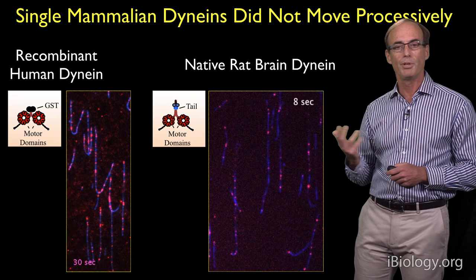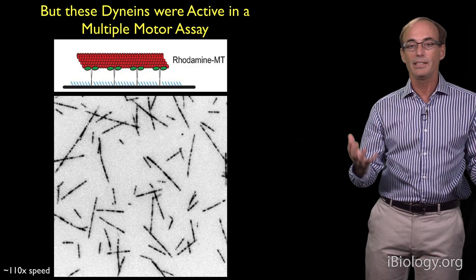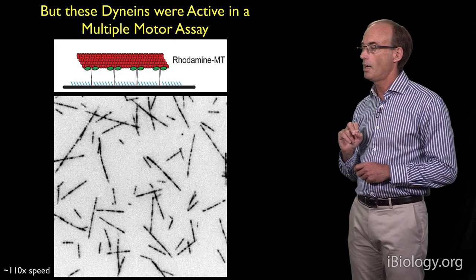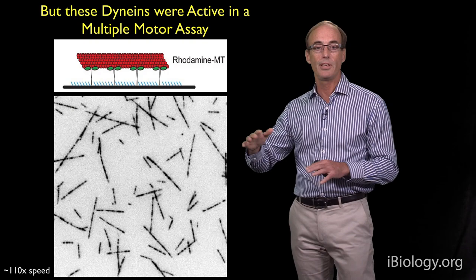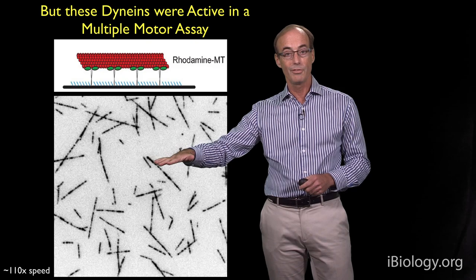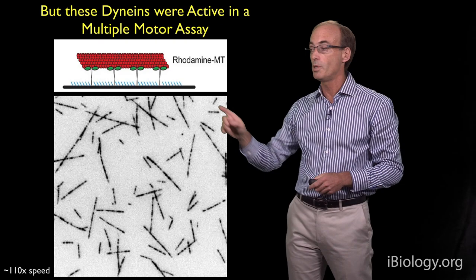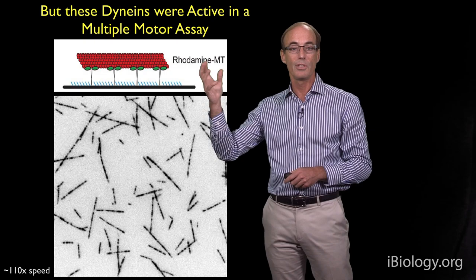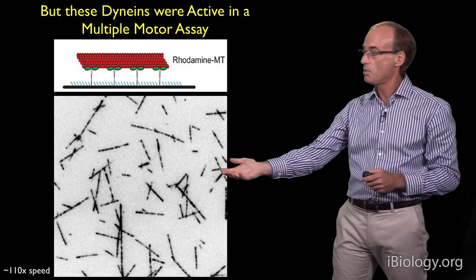However, these dyneins weren't completely inactive, because we then tested them in another kind of motility assay and saw that they could produce movement. This is what's called a microtubule gliding assay. In this case, the dynein is coated and attached onto a glass coverslip. It then grabs hold of a microtubule and can move it across the surface. This is not single molecule motility — there are many dynein molecules underneath that microtubule. These are the microtubules here. When you give it ATP, they move very nicely across the glass.